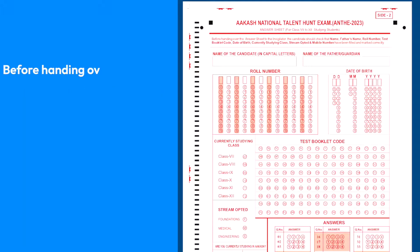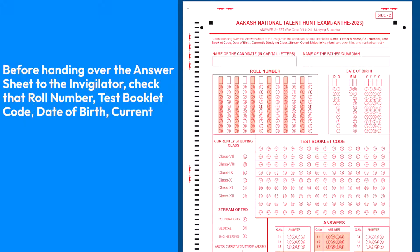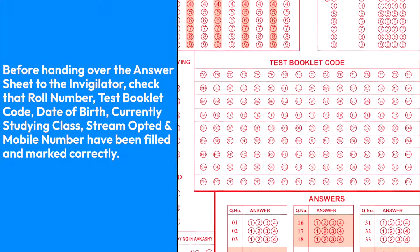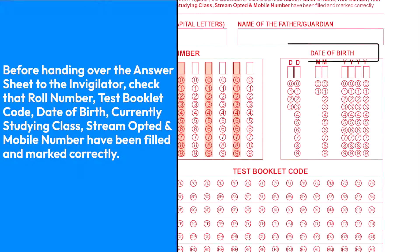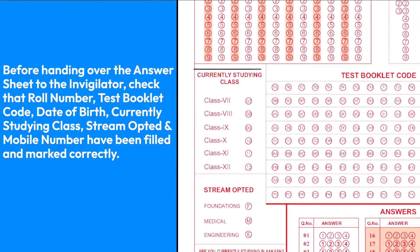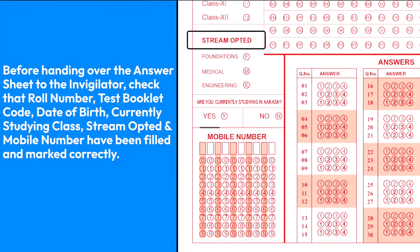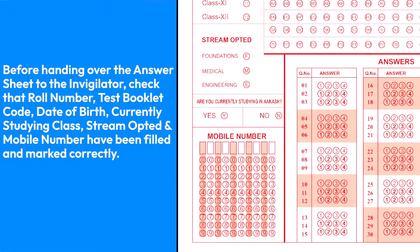Before handing over the answer sheet to the invigilator, check that roll number, test booklet code, date of birth, currently studying class, stream opted, and mobile number have been filled and marked correctly.